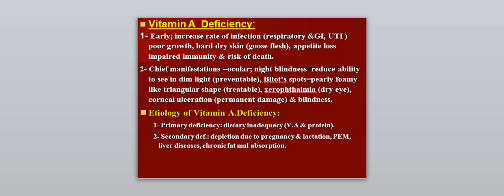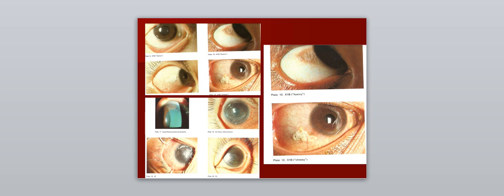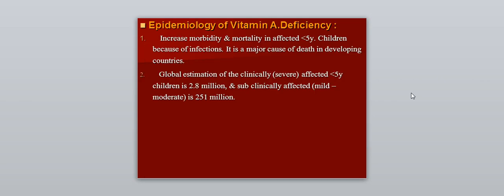The etiology of vitamin A deficiency: primary deficiency occurs because of dietary inadequacy, especially of vitamin A and protein in those with protein energy malnutrition or starvation. Secondary deficiency involves depletion due to pregnancy, lactation, severe malnutrition, liver disease, or chronic fat malabsorption. Xerophthalmia presents as a foamy-like triangular appearance and is treatable, but when corneal ulceration and dry eye occur, this is beyond correction and results in blindness.